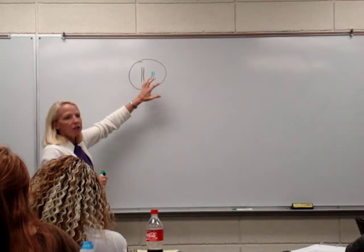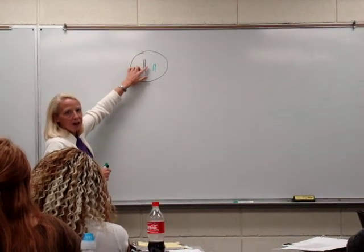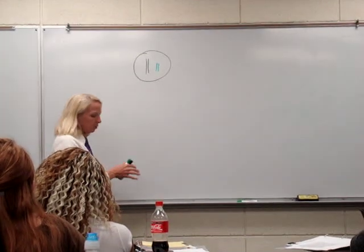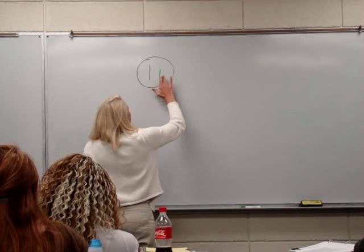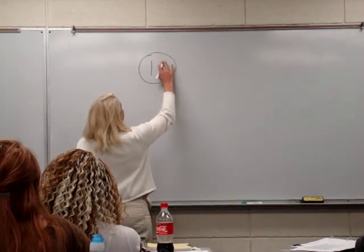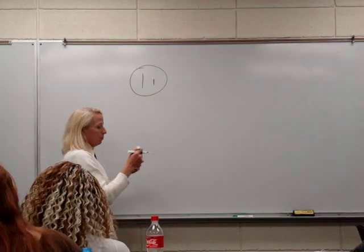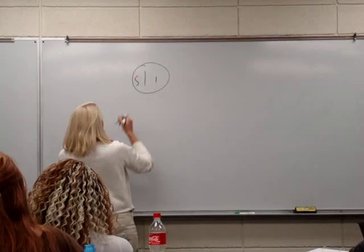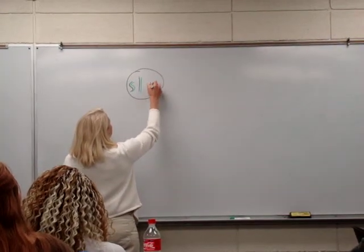Now, law of assortment says when you get one from mom and one from dad, and I should do this in a little different color combination, you're going to get one set from mom and one set from dad.